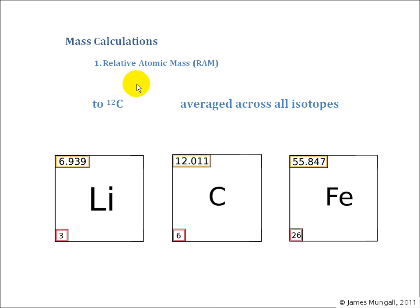If we were to look for a definition of relative atomic mass, well it's relative to carbon 12 and it's the atomic mass averaged across all isotopes. If we have a look at a few examples here, here we've got the lithium atom, its relative atomic mass 6.939, so there is a small amount of lithium 6 isotope in there which brings it down slightly.